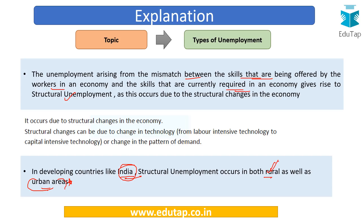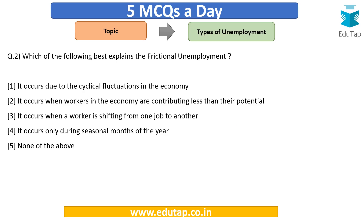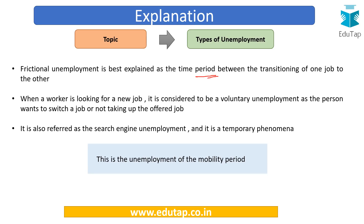You can mention examples in the comment section below. Question number two: which of the following best explains frictional unemployment? The options are: it occurs due to cyclical fluctuations in the economy; it occurs when workers are contributing less than their potential; it occurs when a worker is shifting from one job to another; or only during seasonal months of the year. The answer is option three — it occurs when a worker is shifting from one job to another. That is why frictional unemployment is also known as transitional unemployment — when a person is in the transition phase of their job.